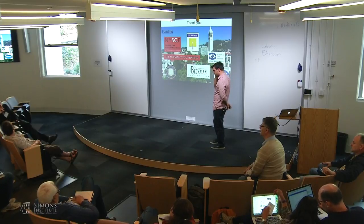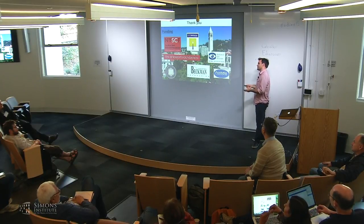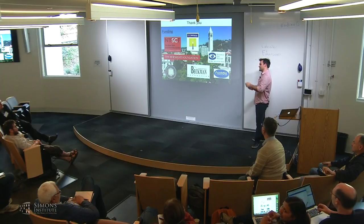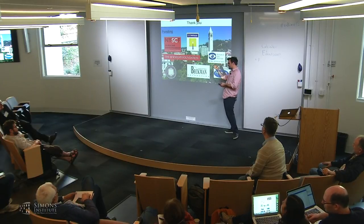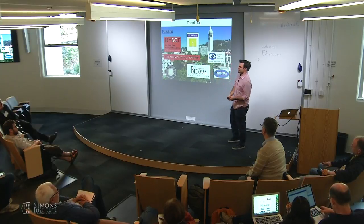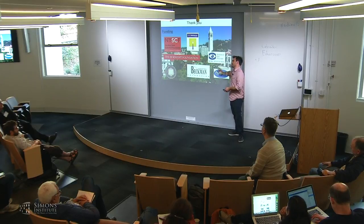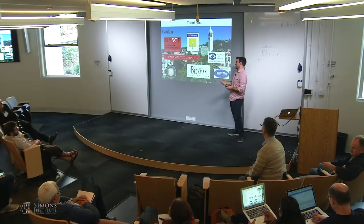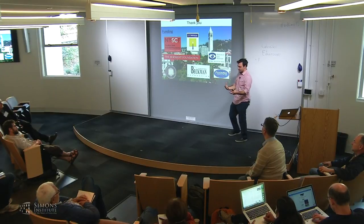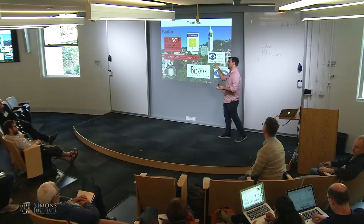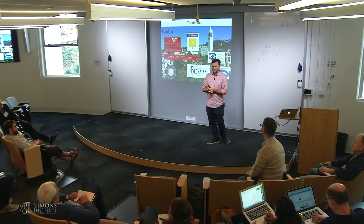Audience question: can you train a mouse to just detect a stimulated population versus a different random population? The speaker says yes, they're fairly confident you could do that — BMI works like that. They haven't tried it, but you could ask if mice can tell the difference between two very similar spike trains with one spike jittered. The key goal is asking what features of the natural stimulus best correlate with perception.